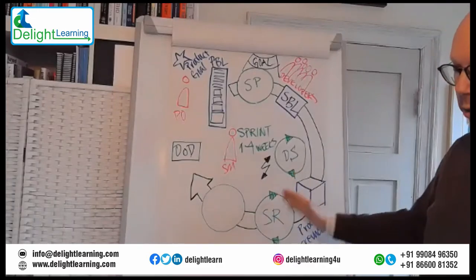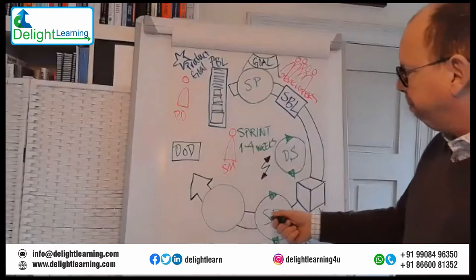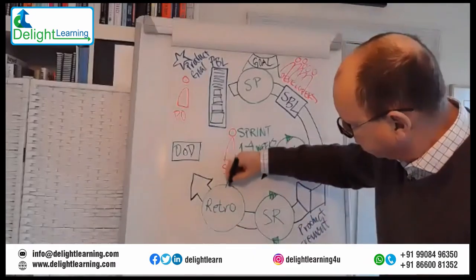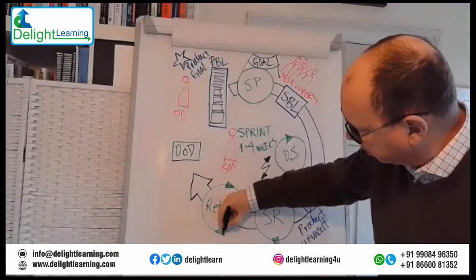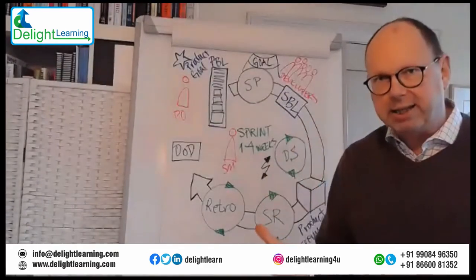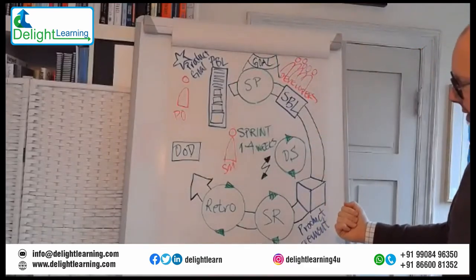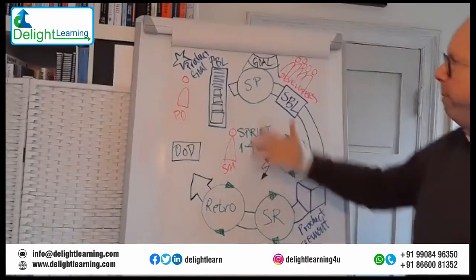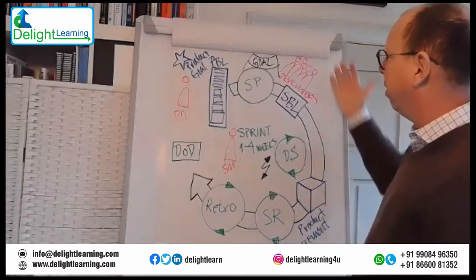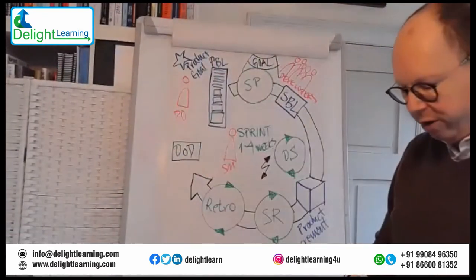During the last event of the sprint — the retrospective, which also happens on the last day — the small arrows on the circles illustrate inspect and adapt. At the daily Scrum we inspect progress towards the sprint goal and adapt the plan for the next day. At sprint review we inspect the product increment and adapt the product backlog. During the retrospective, the entire Scrum team — product owner, Scrum master, and developers — inspects their ways of working and adapts them for the future to improve.